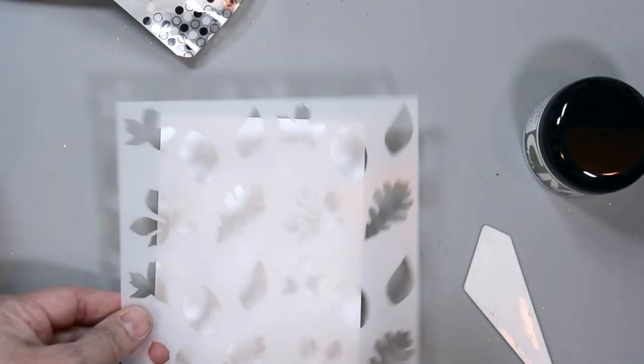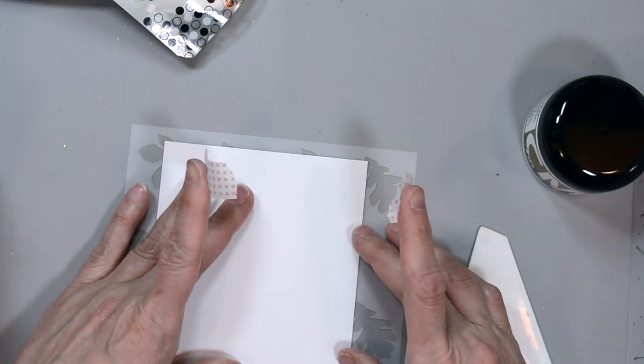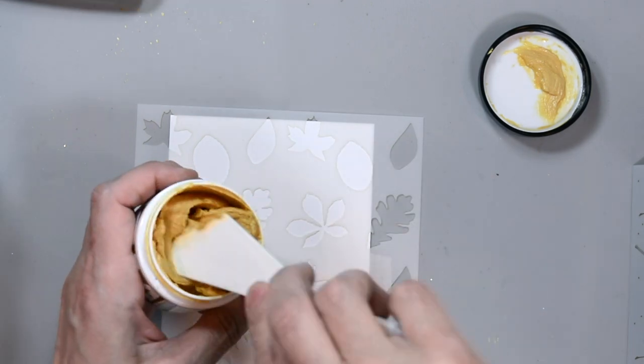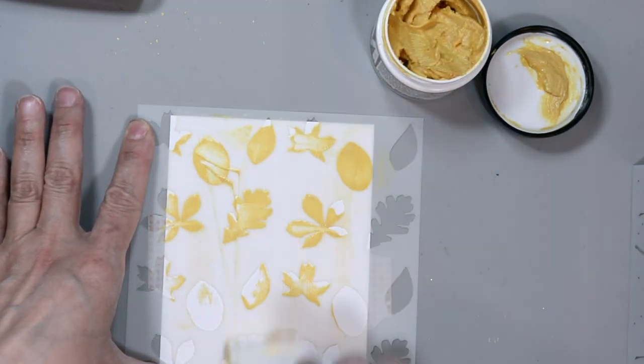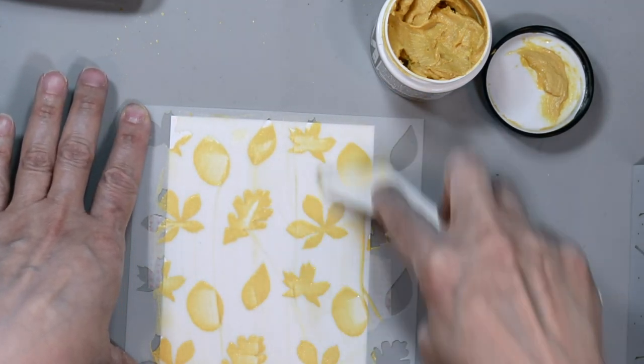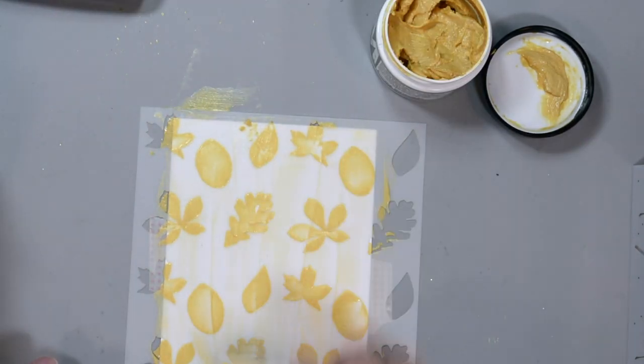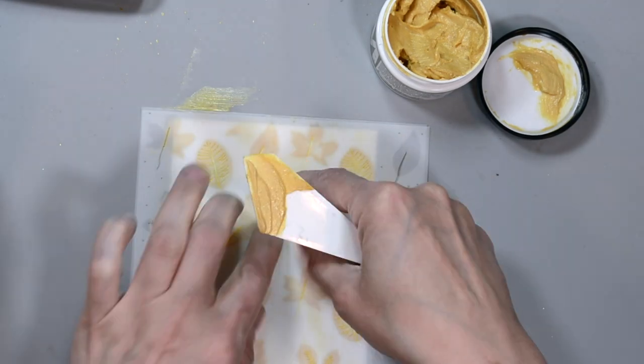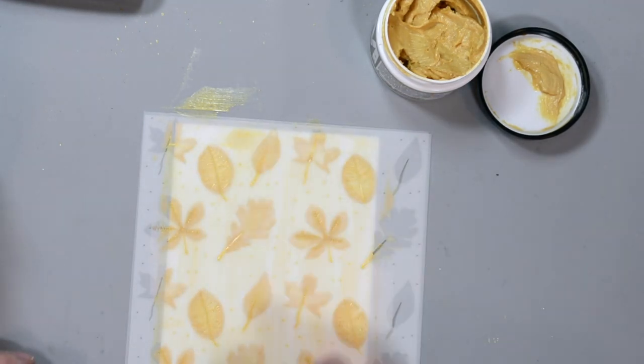I'm going to go ahead and take our layering stencil and tape it to the our accent 80 pound smooth cardstock. I'm going to use a palette knife to smooth on our texture paste through the stencil. So this is the first layer and it's just a solid image of the leaves. The second layer of this stencil gives the detail, the veining of the leaves. So I'm going to now place the second layer on and smooth some more of the texture paste.